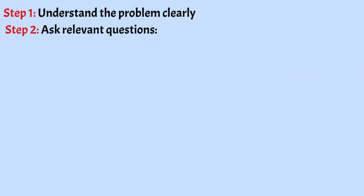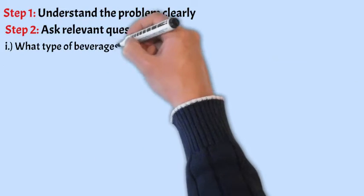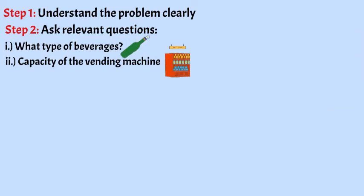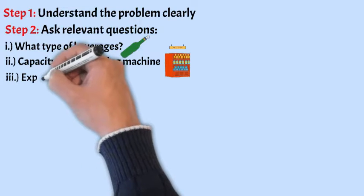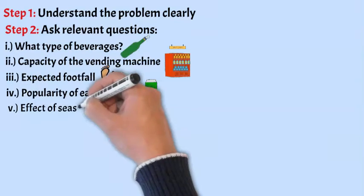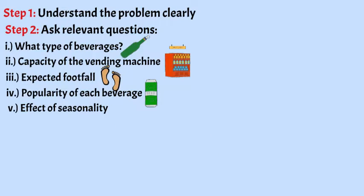Your step number two is digging deeper. That is asking relevant questions. So, here you can ask questions like what type of beverages would the machine offer? What is their nature, variety, etc. What is the capacity of the vending machine? What is the expected footfall in the mall during the weekdays, weekends and peak hours? What is the popularity of each beverage based on any past data that you might have? And then what is the effect of seasonality on the demand for this particular beverage?